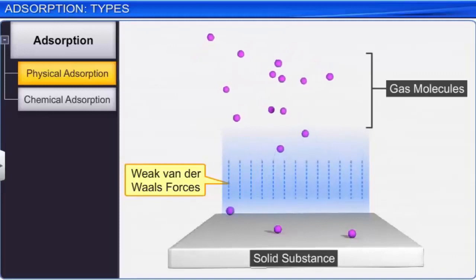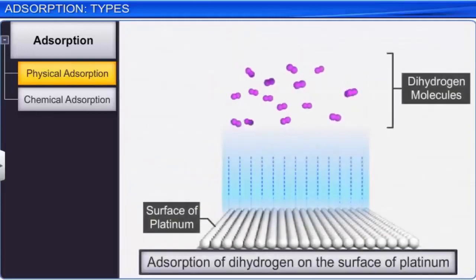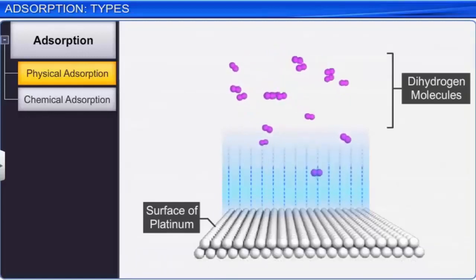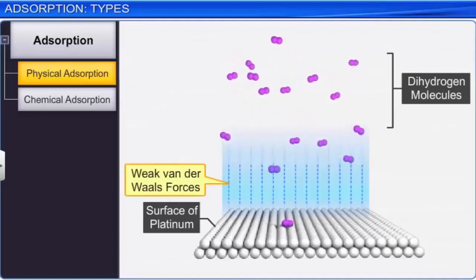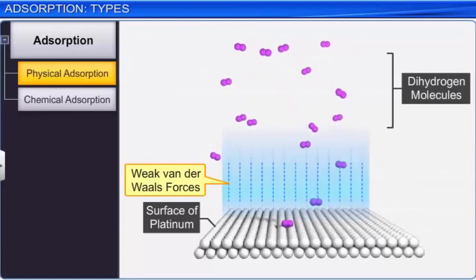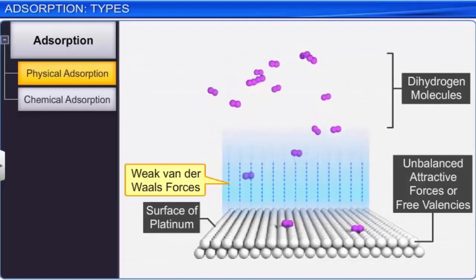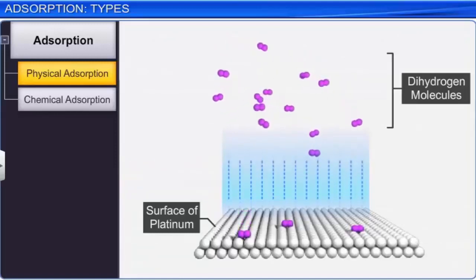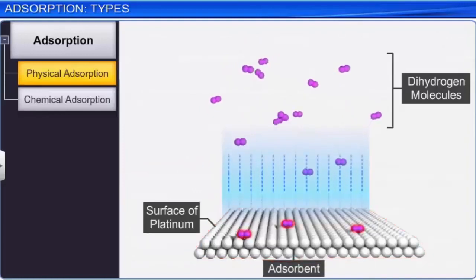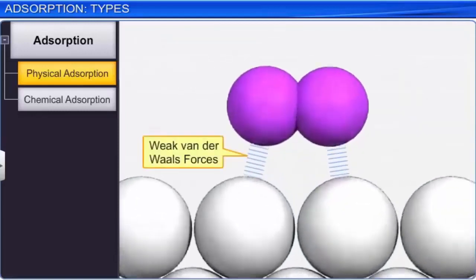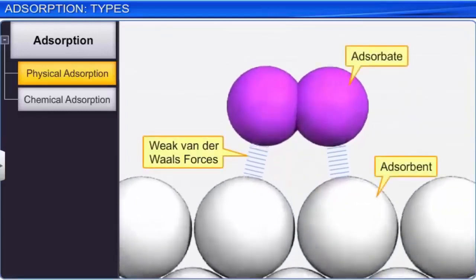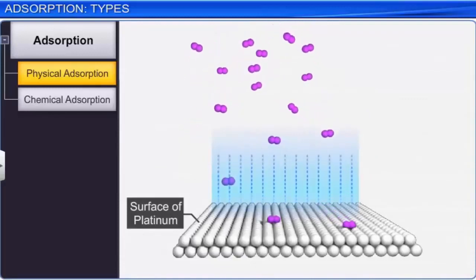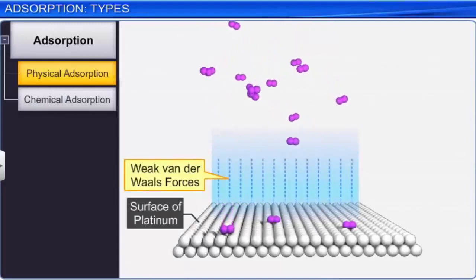In the adsorption of dihydrogen on the surface of finely divided platinum, hydrogen molecules are first attracted towards the surface of platinum by weak Van der Waals forces, and then adsorbed due to the presence of unbalanced attractive forces or free valencies on the metal surface. This is physical adsorption. Platinum is the adsorbent and dihydrogen molecules are the adsorbate. Note that there is no chemical bonding between the adsorbent and the adsorbate. Thus, physical adsorption occurs when a gas accumulates on the surface of a solid by Van der Waals forces without the formation of a chemical bond.